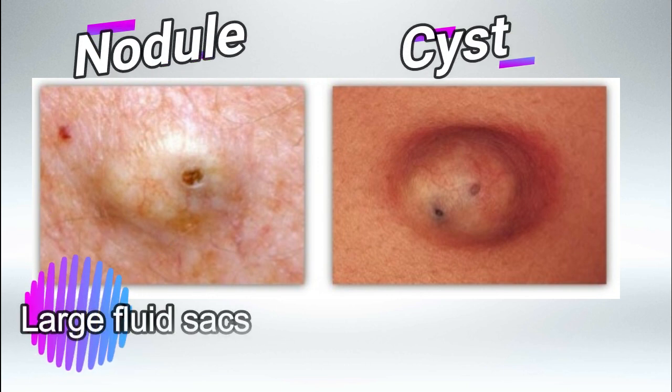Next we have nodules and cysts. They're both large fluid sacs, and the only difference is that nodules have most of their content in the deep layers of the skin, while cysts have most of their content in the superficial layers of the skin.